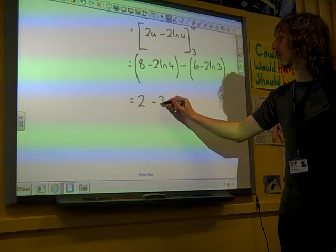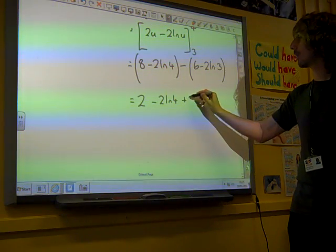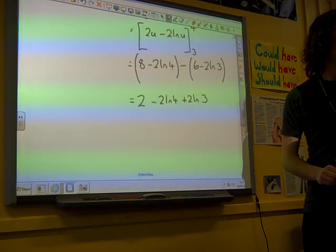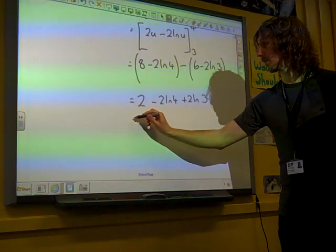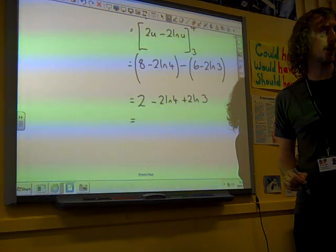What else have we got? We've got minus 2 ln 4 plus 2 ln 3. If you're confident just to write down the answer from there, then great.